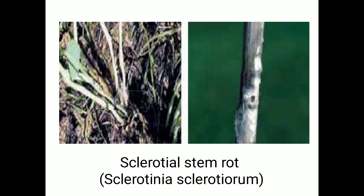If the infestation is severe, girdling of the stem takes place, resulting in premature ripening or lodging of the plants. If you split the stem, blackish or brownish mustard-seed-like sclerotia are observed inside the stem — this is the typical characteristic of Sclerotinia. If infestation is severe, yield loss can be up to 10 to 15 percent, making it a highly infectious disease.